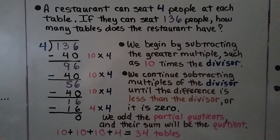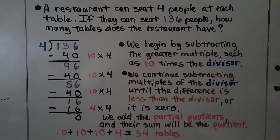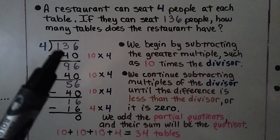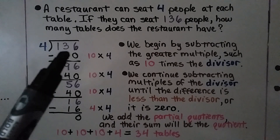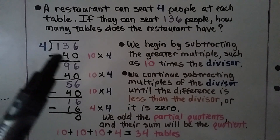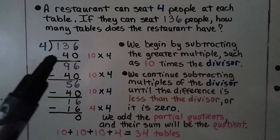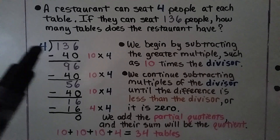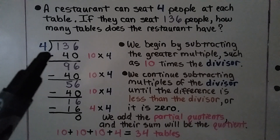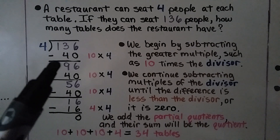A restaurant can seat 4 people at each table. If they can seat 136 people, how many tables does the restaurant have? We begin by subtracting a greater multiple, such as 10 times the divisor, from 136, our dividend. And 10 times 4, our divisor, is 40. We subtract it and our difference is 96.